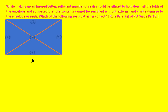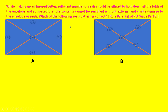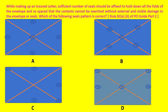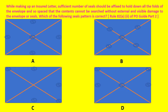While making up an insured letter, a sufficient number of seals should be affixed to hold down all the folds of the envelope and so spaced that the contents cannot be searched without external and visible damage — Rule 82A2 of PO Guide Part 2. Which seal pattern is correct — A, B, C, or D? Option A has one seal at the center and four seals around the four sides. The answer is B, because with A, C, and D, anyone can lift parts of the envelope and see the contents.